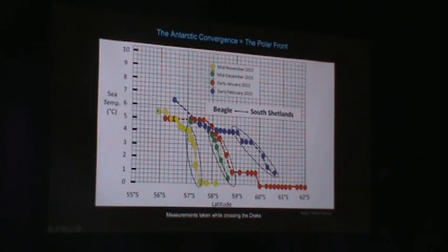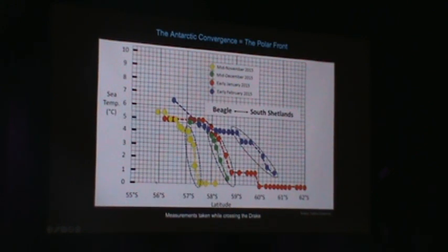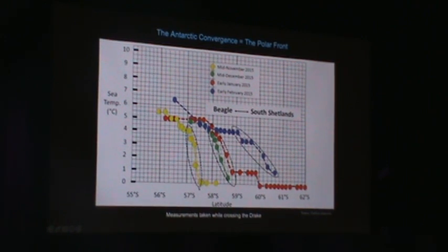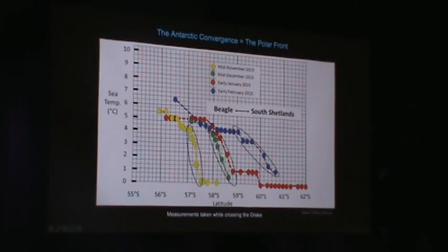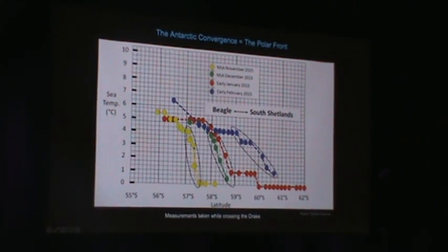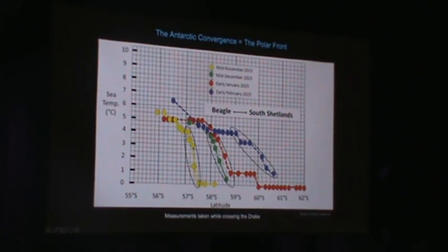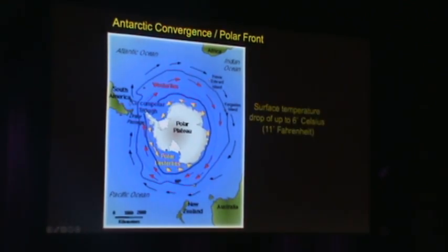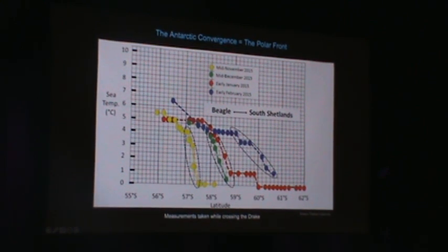Let's take one example for mid-November. You'll see it starts at roughly 56 degrees south latitude and over a little more than a degree of latitude, it drops from about almost 6 degrees Celsius down to 0 degrees Celsius — taking place roughly from 56 to 57 degrees south latitude.